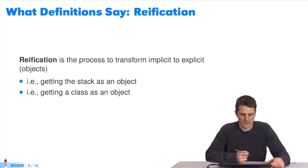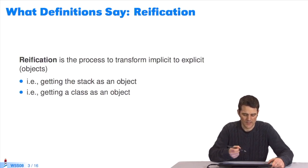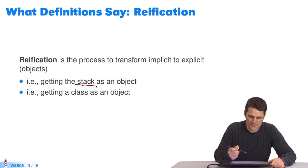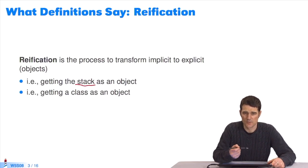Reification is a concept that consists of making explicit objects, things that are normally implicit. For example, the execution stack in Pharo is explicit but can be got as a classic object. More classically, a class in Pharo is a totally classic object. In other languages, classes aren't objects.